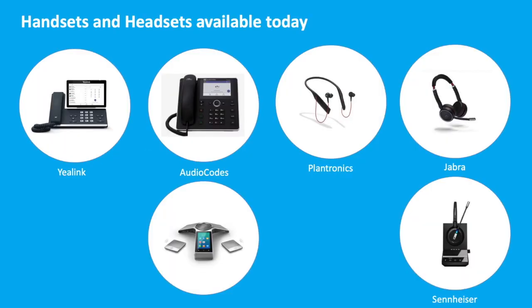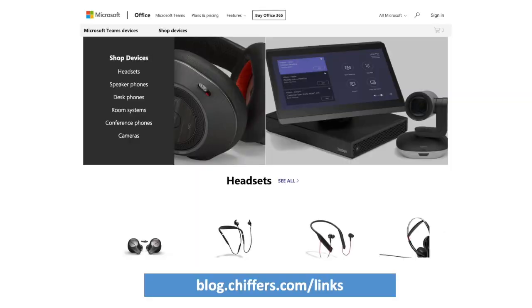If we do want to deploy handsets, there are a few available today — more are in the pipeline. Those who went to Ignite will have seen Polycom's iterations, but those aren't available yet. What's available right now: a couple from Yealink, AudioCodes including meeting room systems, and headsets from Plantronics, Jabra, and Sennheiser. Microsoft has produced a handy list of supported devices — you can access the link at blog.chiffers.com/links.